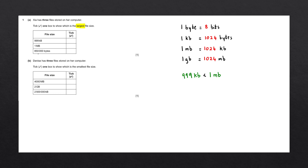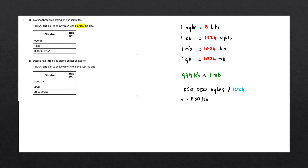The last file size we have is 850,000 bytes. Let's go ahead and convert this into megabytes to see which one is larger. To do this conversion, we first need to convert it into kilobytes. So we take 850,000 bytes and divide it by 1024. This gives us approximately 830 kilobytes, and we can see that 830 kilobytes is less than one megabyte. Hence, the largest file size here is one megabyte.